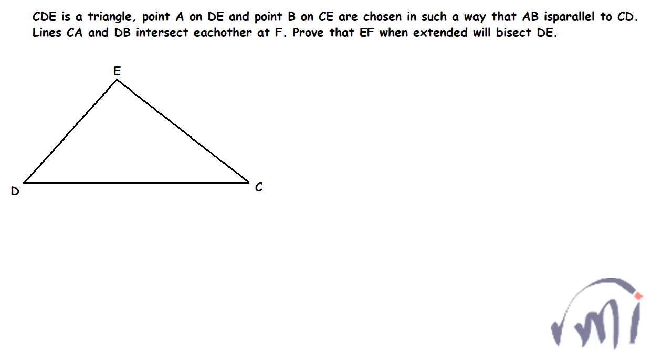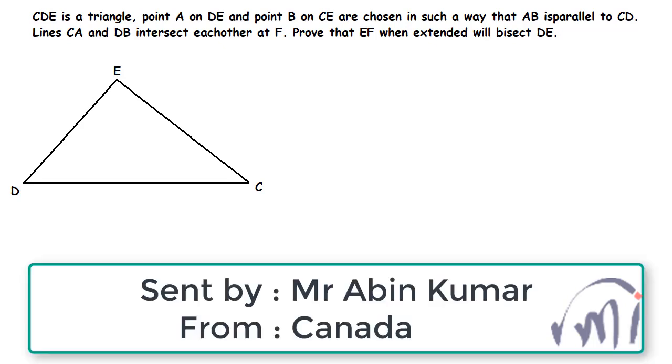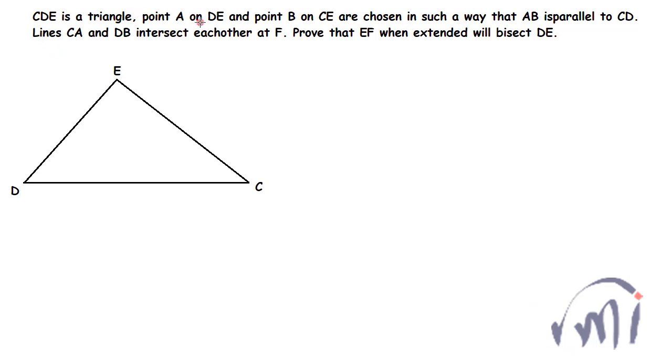Hi, so here we have a problem which was sent by Mr. Abhin Kumar from Canada. In this problem, CDE is a triangle, point A on DE and point B on CE are chosen in such a way that AB is parallel to CD.